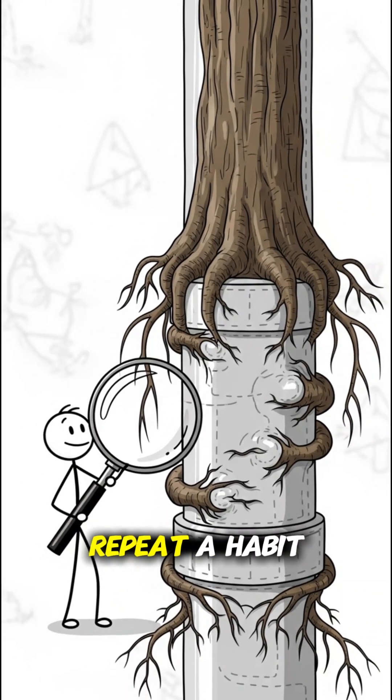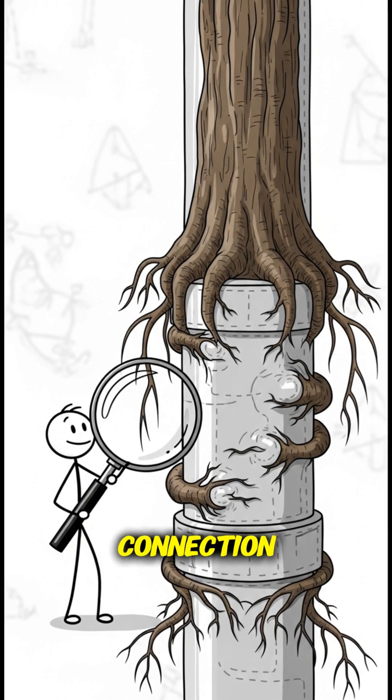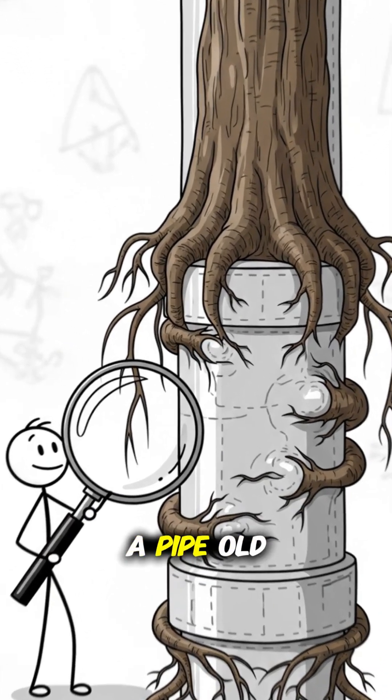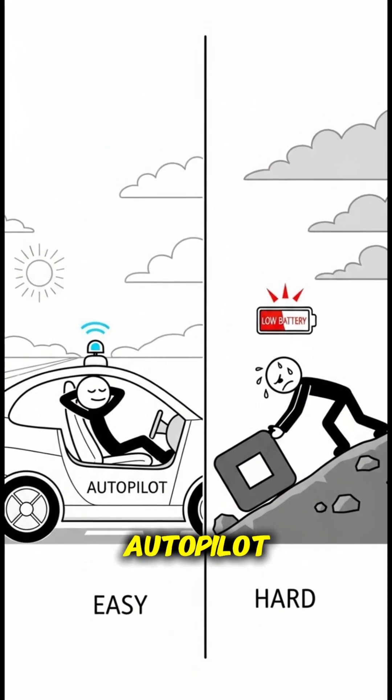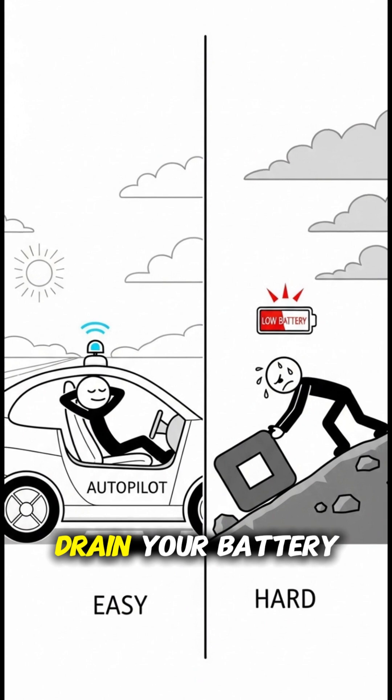Every time you repeat a habit, neurons wrap themselves tighter around the connection, like roots around a pipe. Old habits run on autopilot, while new ones drain your battery completely.